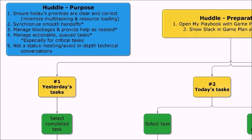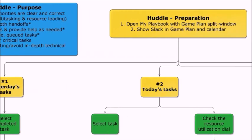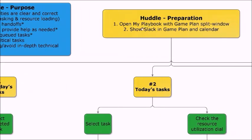Here's what we do to prepare. Where it says 'open my playbook,' it should probably say either 'open the huddle' or 'my playbook,' depending on whether we're running a project-specific huddle or a pool-of-resources huddle. For a pool of resources, we generally use 'my playbook.' For a project-specific huddle, we use the huddle view. Either way, in both views we want to open the game plan split window and turn slack on, because slack helps us understand priorities.